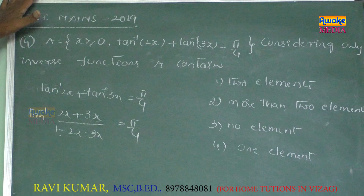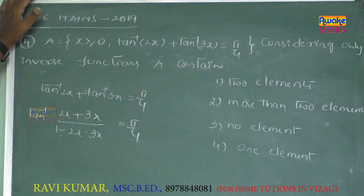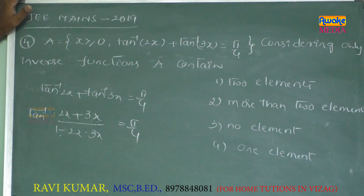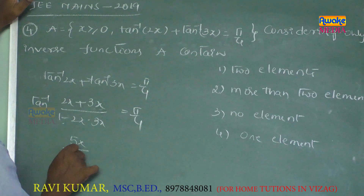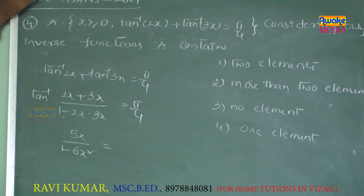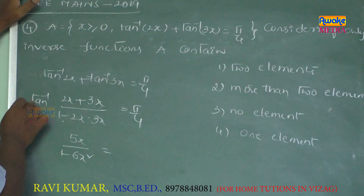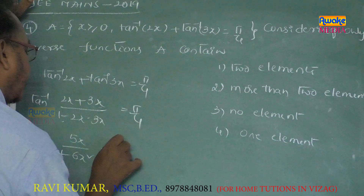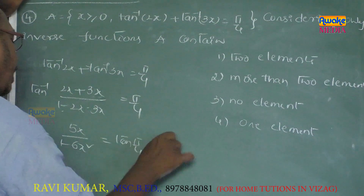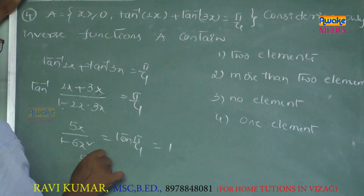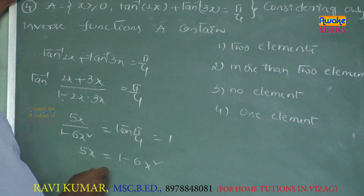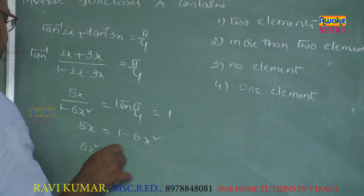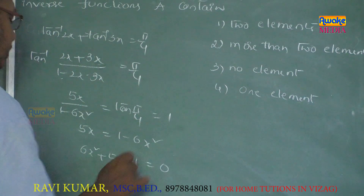This formula is valid when x > 0 and y > 0. We write (2x + 3x)/(1 - 6x²) = 5x/(1 - 6x²) equals tan(π/4) = 1. So 5x = 1 - 6x², giving the equation 6x² + 5x - 1 = 0.